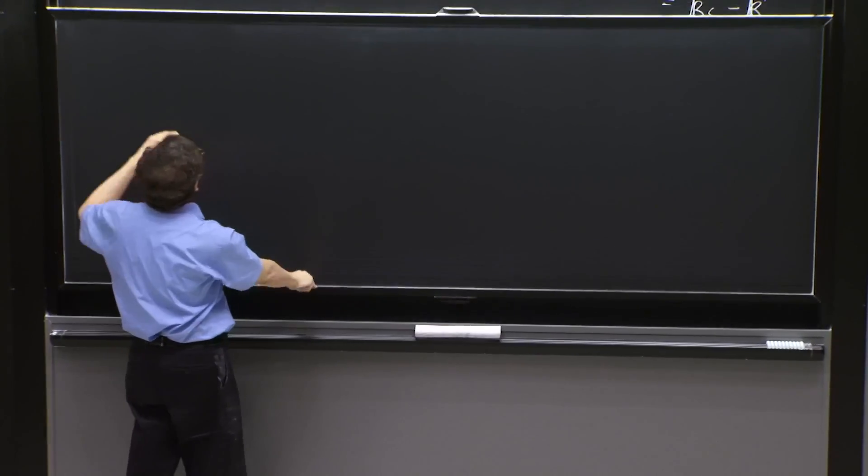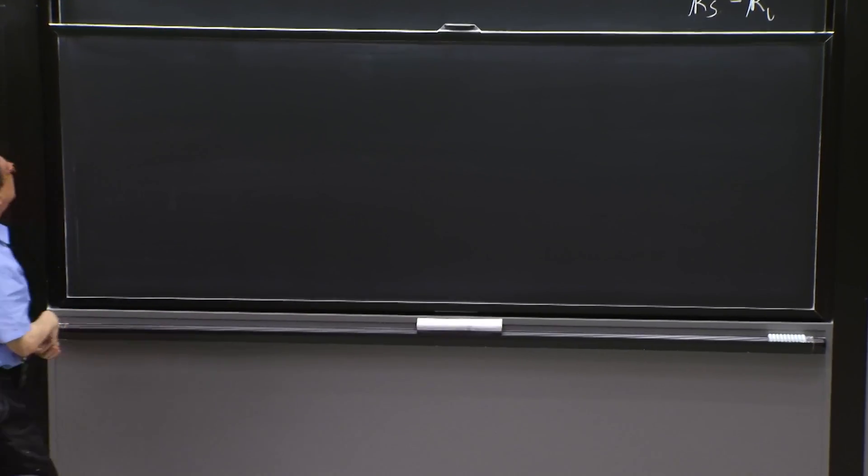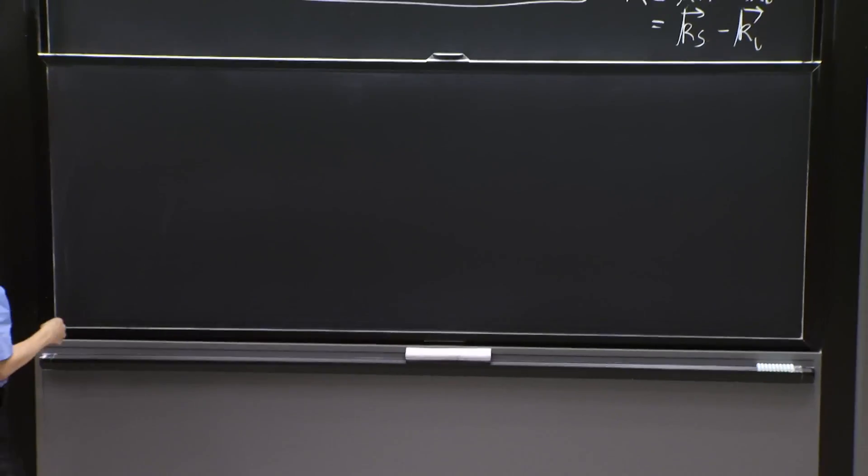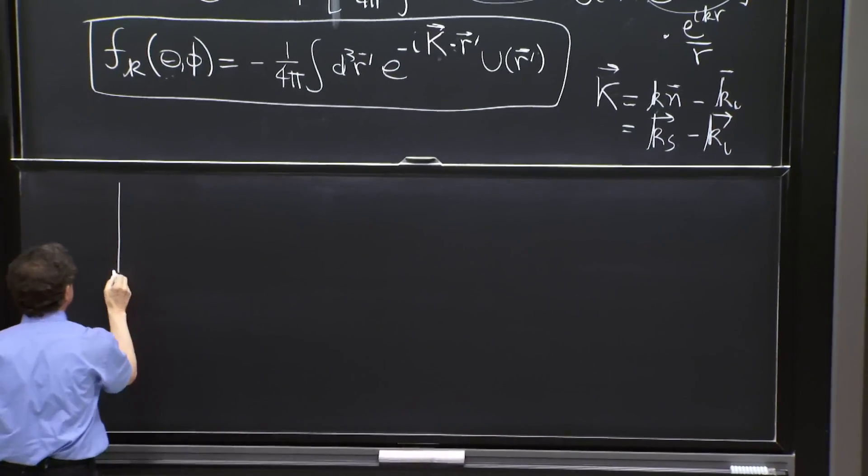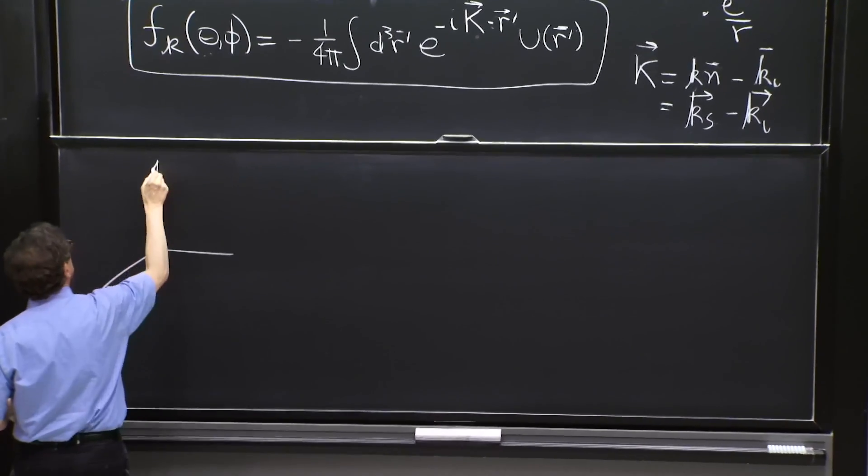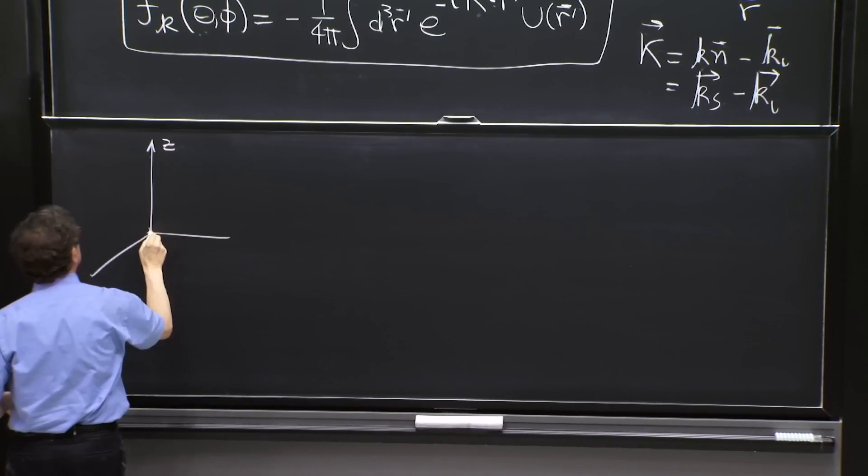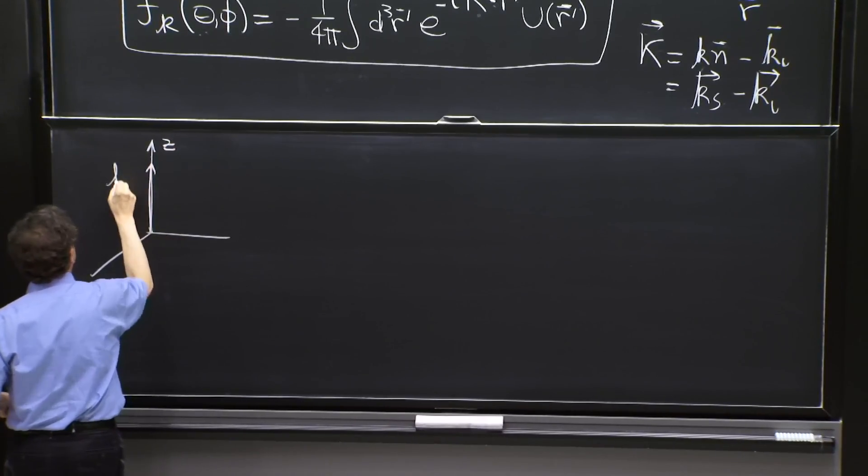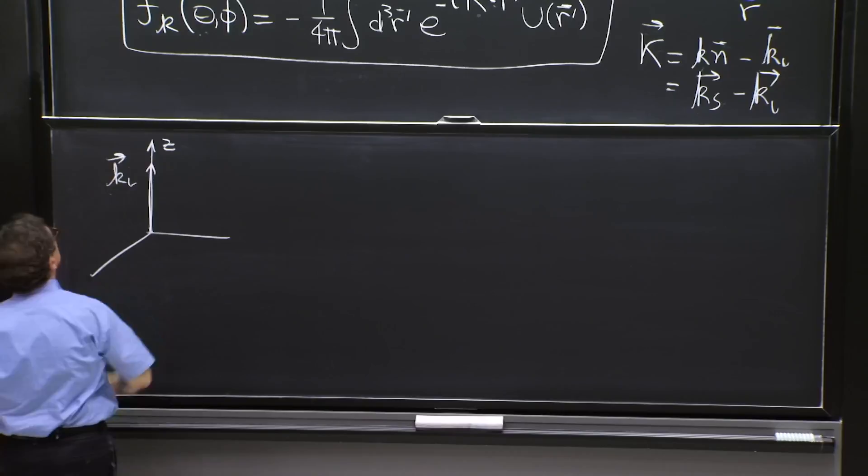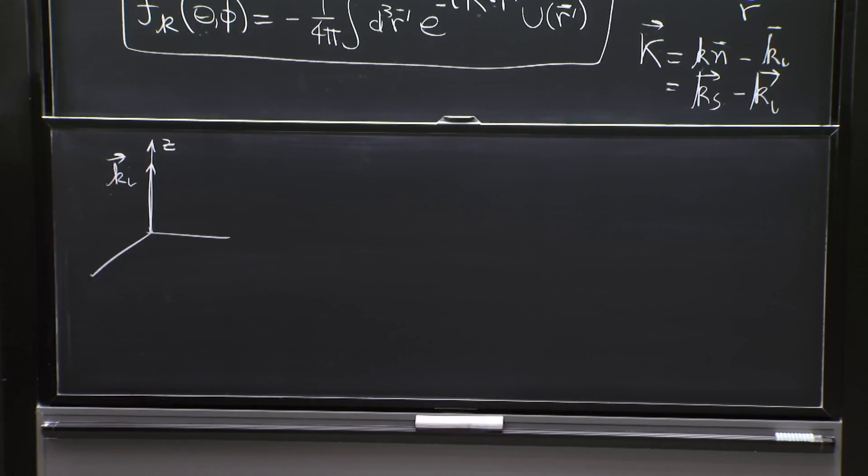So for that, if you want to use really theta and phi, I think most people will assume that k incident is indeed in the z direction. So here is k incident, and it has some length. k scattered has the same length. It's made by the same wave number k without any index, but multiplied by the unit vector n.